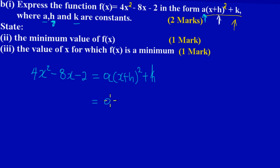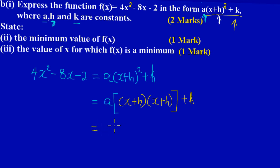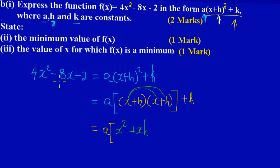So expanding: a times open bracket x plus h close bracket squared. Since it is squared, x plus h is multiplying itself, so we get a times open bracket x plus h times x plus h close bracket. Expanding: x times x gives x squared, x times h gives xh, h times x gives another xh, and h times h gives h squared.